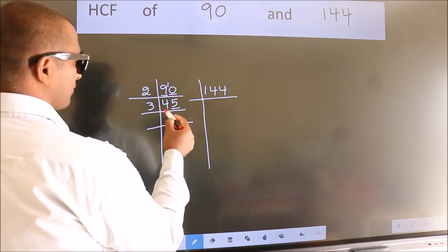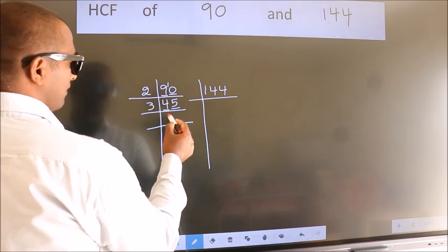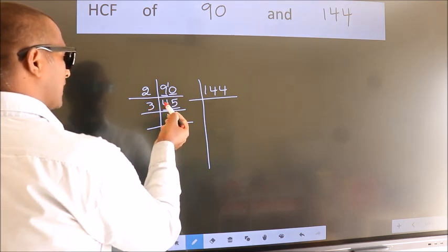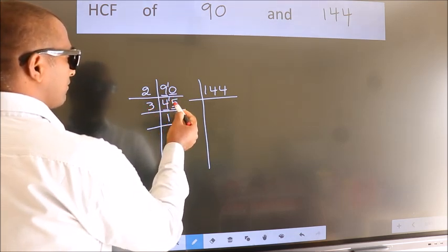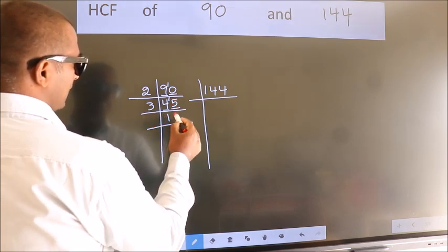First number 4. A number close to 4 in 3 table is 3 once 3. 4 minus 3, 1, 1 carried forward 15. When do we get 15 in 3 table? 3 fives 15.